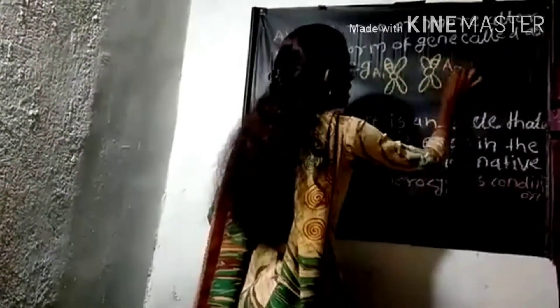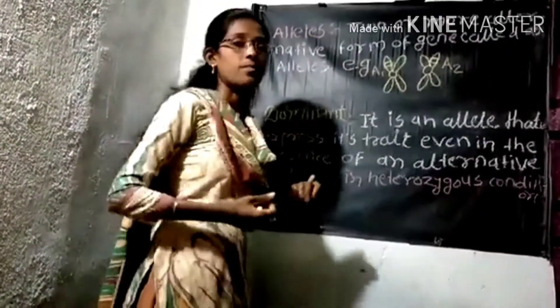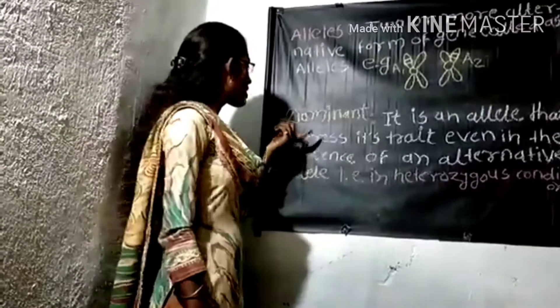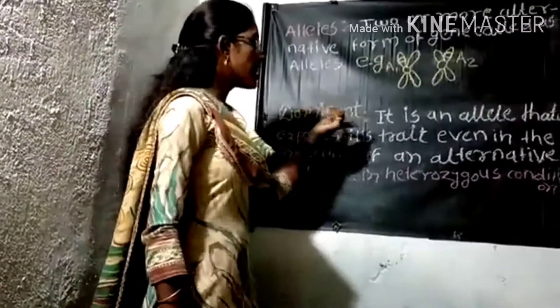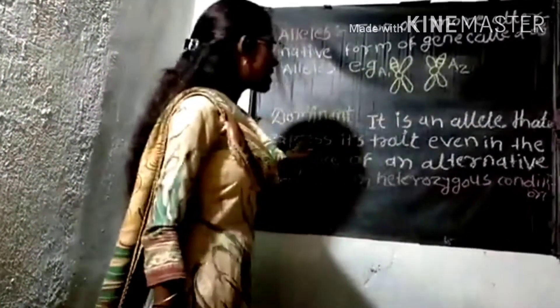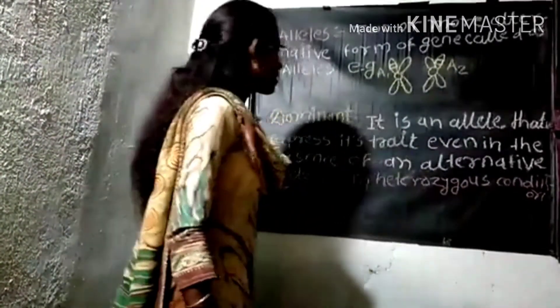The next term is 'dominant.' Dominant is an allele that is expressed even in the presence of its alternative allele.